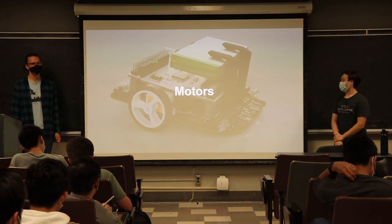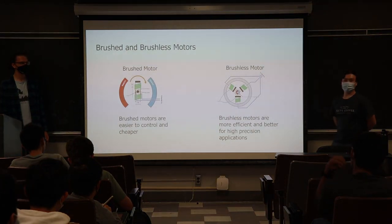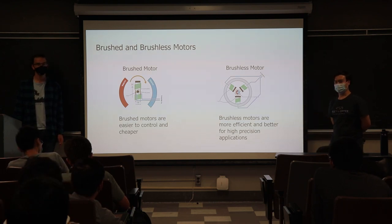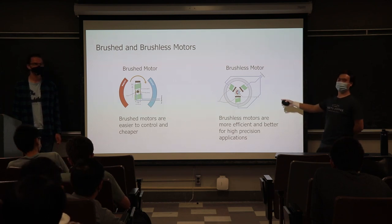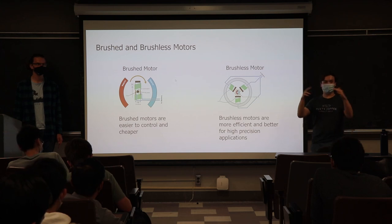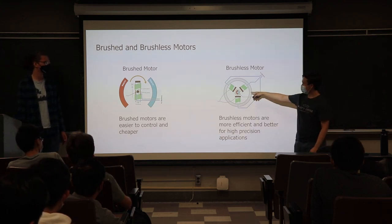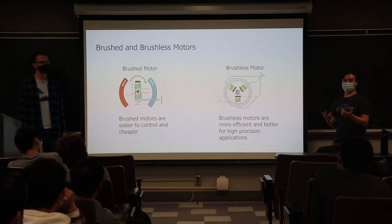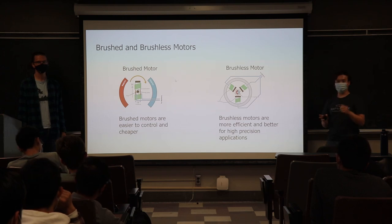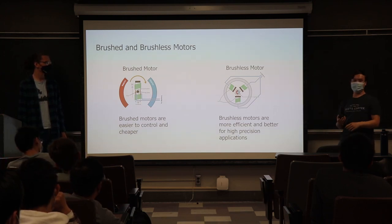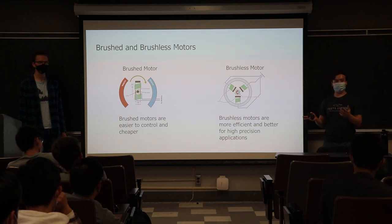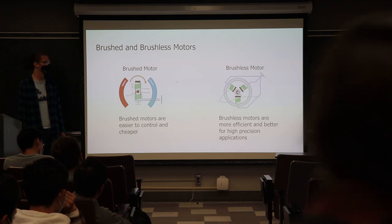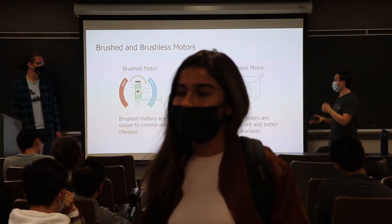Now we're going to talk about the motors on our RAT. First, let's cover types of motors — brushed and brushless. These are the two major kinds you'd see in a lot of applications today. The biggest difference, as is apparent by the naming, is one has brushes that physically contact the spinning rotor, and the other doesn't — it spins in the middle, controlled by three static electromagnets.